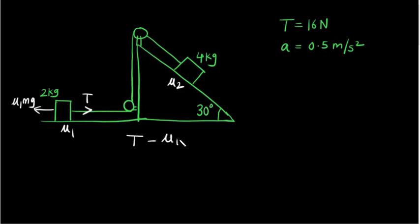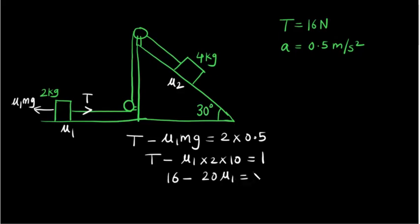So T minus mu1 mg is equal to 2 times 0.5. So this will become T minus mu1 into 2 into 10 is equal to 1. So T is given to us that is 16. So 16 minus 20 mu1 is equal to 1. So 15 is equal to 20 mu1.